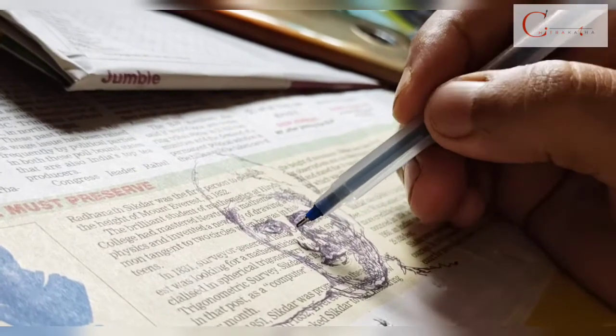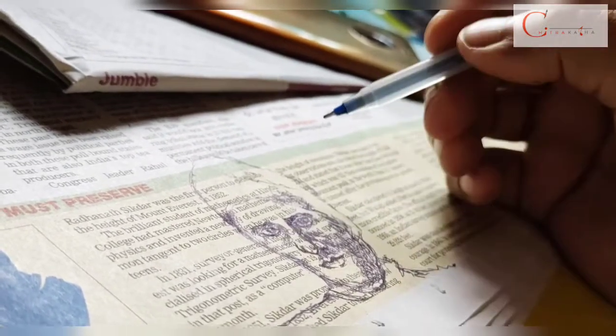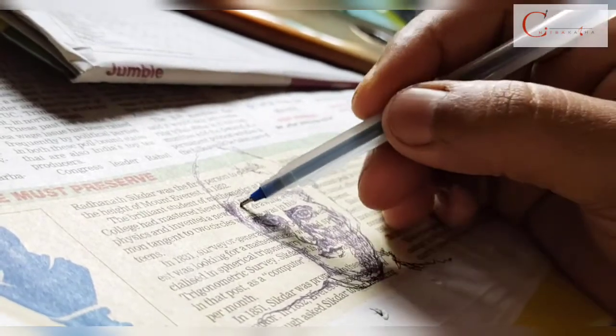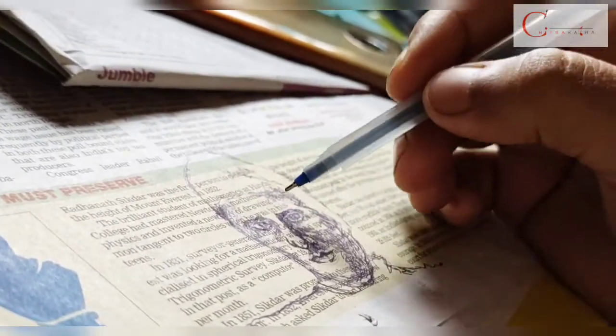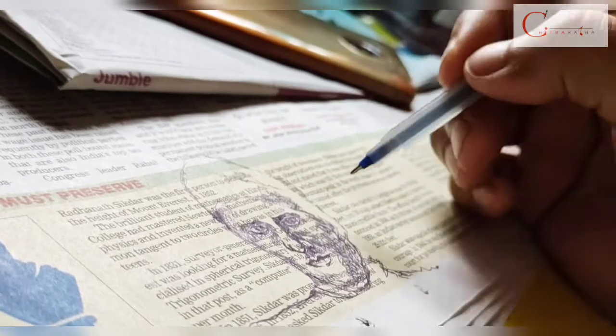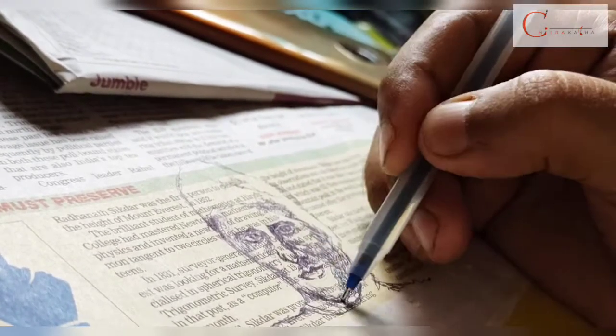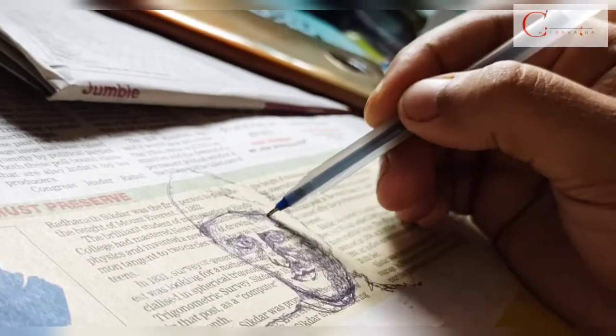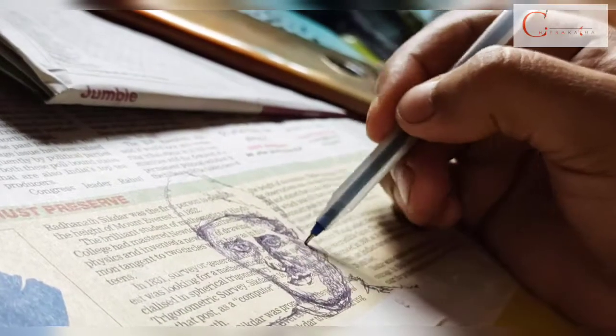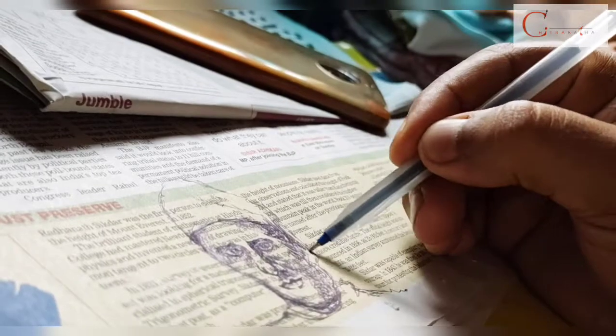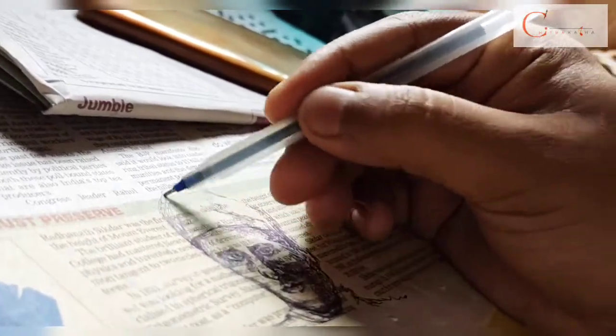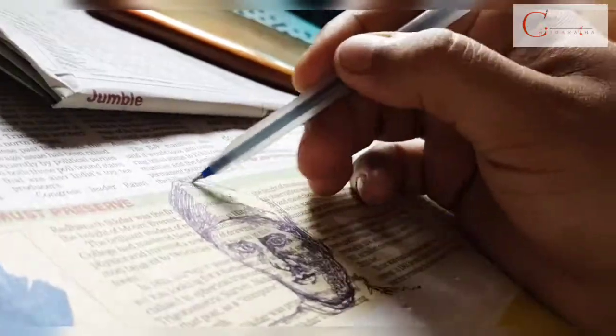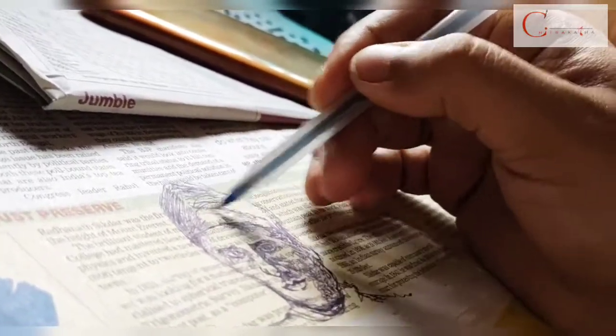Sikdar calculated its height at exactly 29,000 feet, but Waugh added two feet to make it appear a more credible figure. The official height was announced in 1856 as 29,002 feet. A century later, in 1955, an Indian survey announced the height at 29,029 feet.